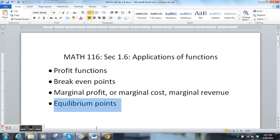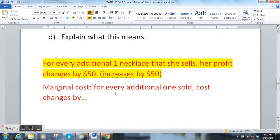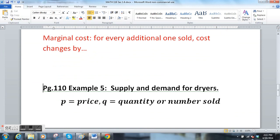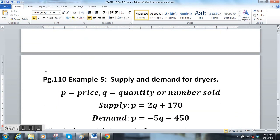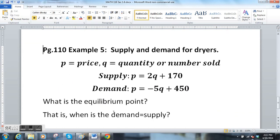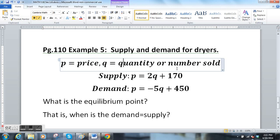So profit functions we found that, break-even points, that's where the profit equals zero, marginal profit, that is the slope of the profit function. Now I want to quickly show you equilibrium points. There's a nice example in your book, page 110.